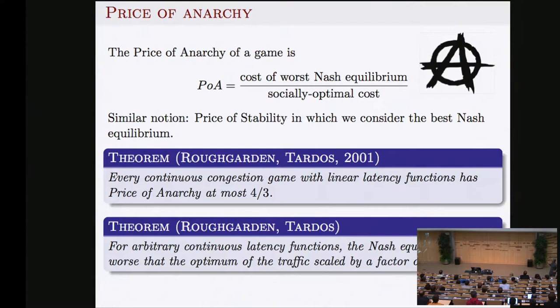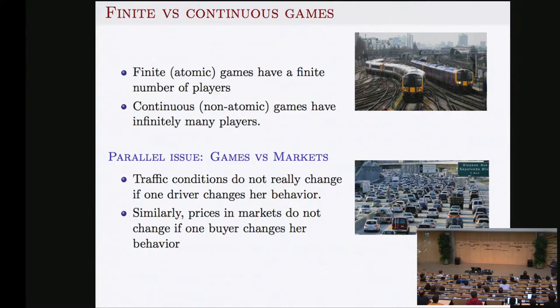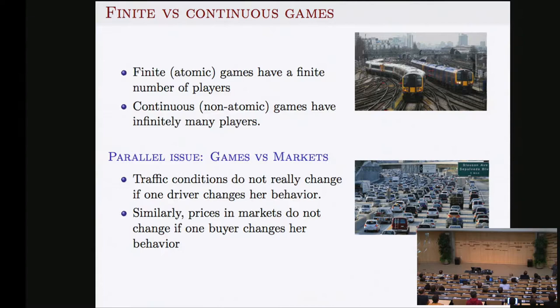Yesterday we talked about finite games; this was an infinite game with infinitely many players. The analog is finite congestion games, where you have few players — two, three, or ten — each establishing a path. This is a congestion game with few players who affect each other greatly, versus the continuous case like Los Angeles. In game theory, the decisions of one affect everybody; in markets, you cannot affect prices unless you are a very powerful individual.